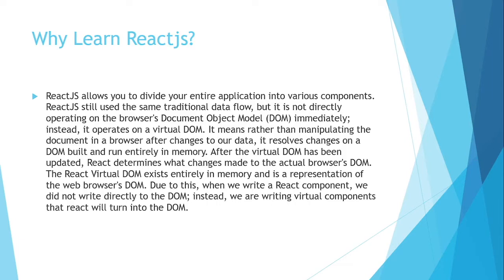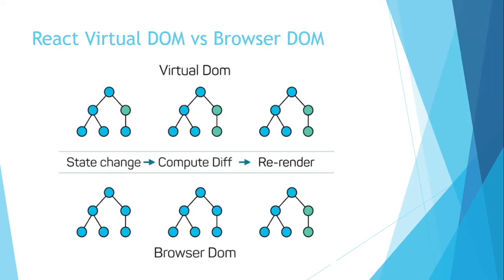That's why React saves memory and works very smoothly, building applications much faster. Let's go to the next slide: Virtual DOM versus Browser DOM. When working in React.js, it first checks whether the state has changed, then computes the difference, and re-renders only the part of the application that changed.